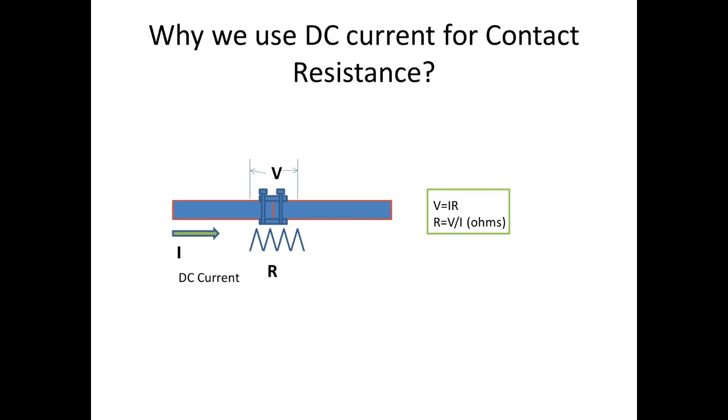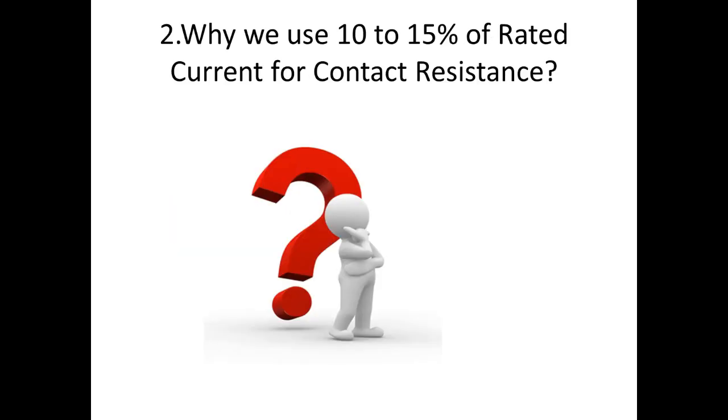Next, why we use 10 to 15 percent of rated current of the equipment to find the contact resistance: if you increase the current or if you give the nominal current value, then the conductor is going to have heat.